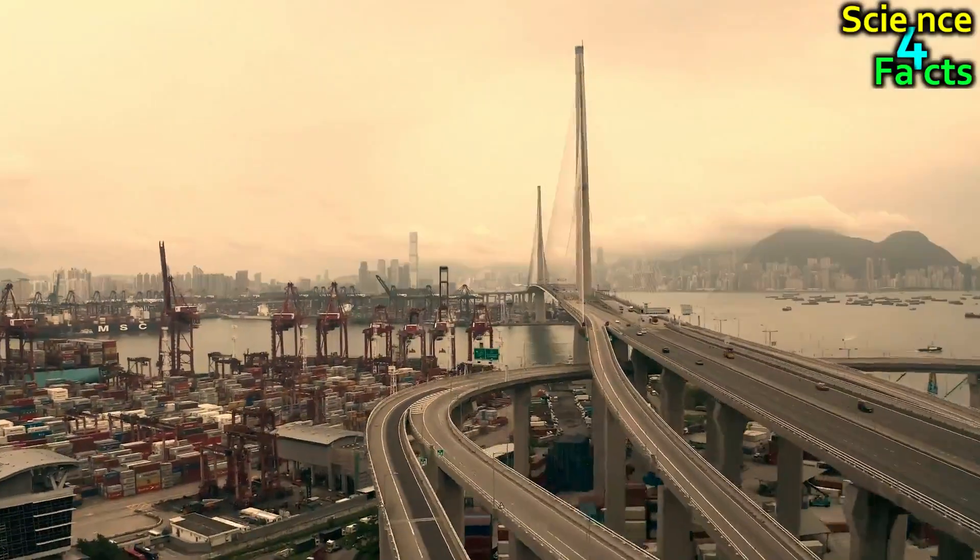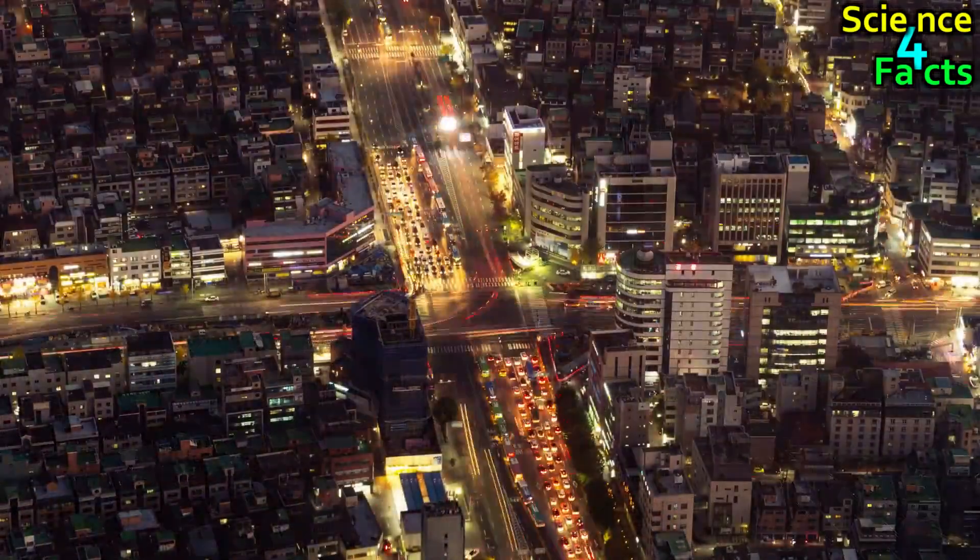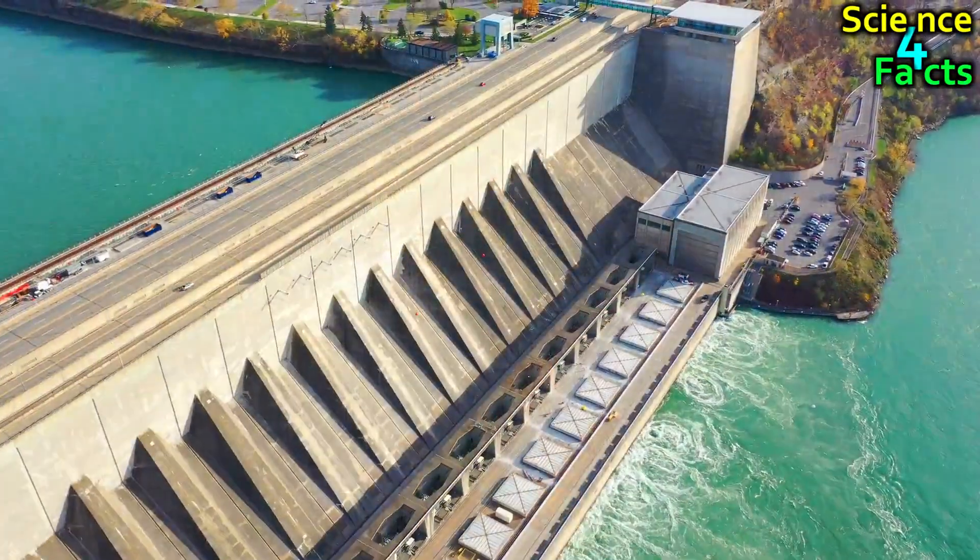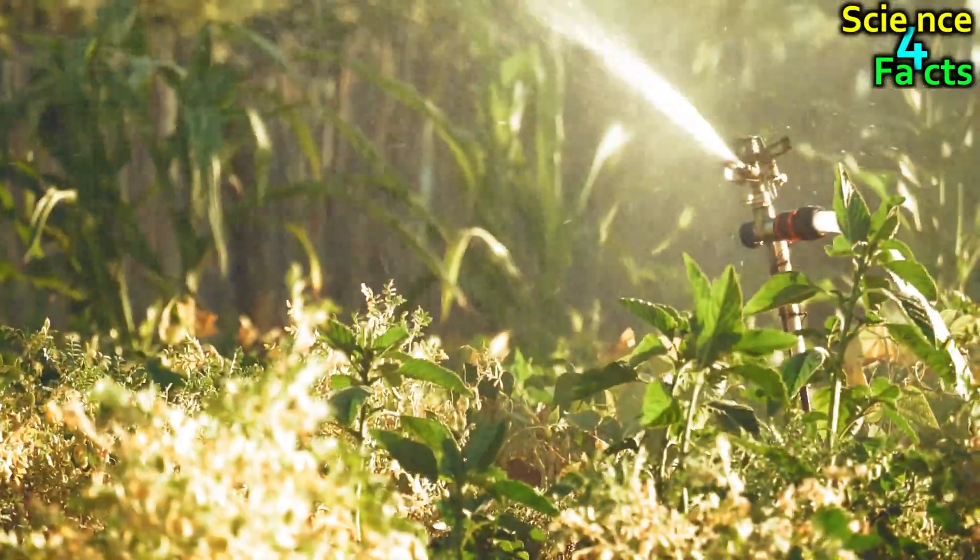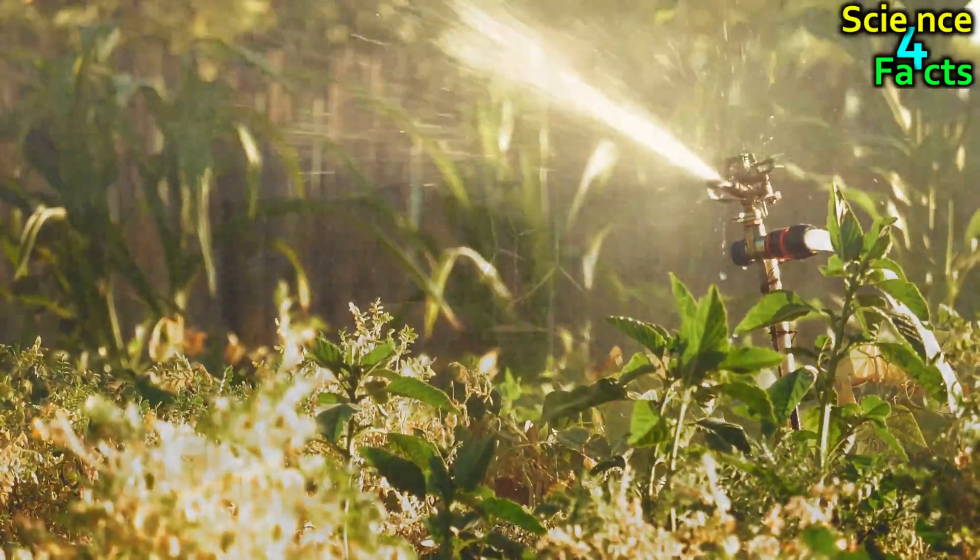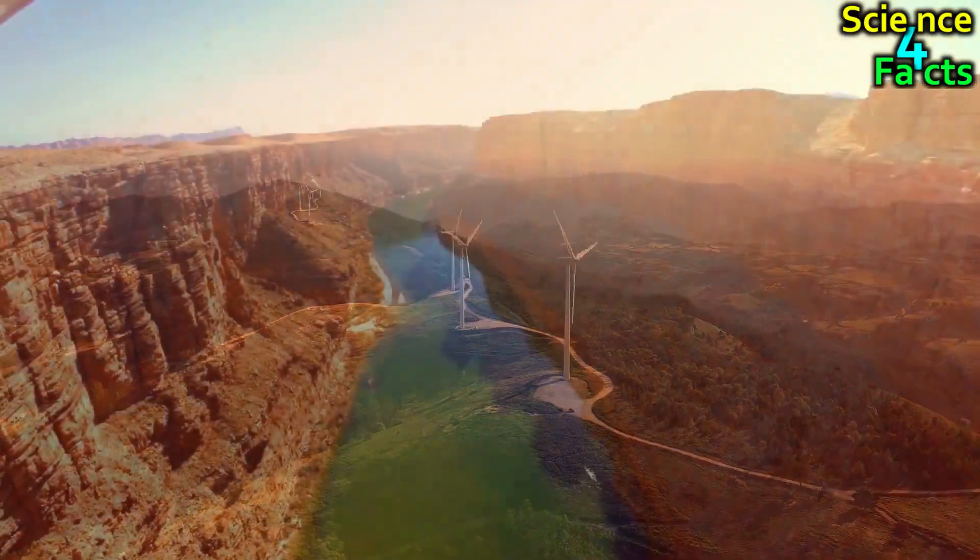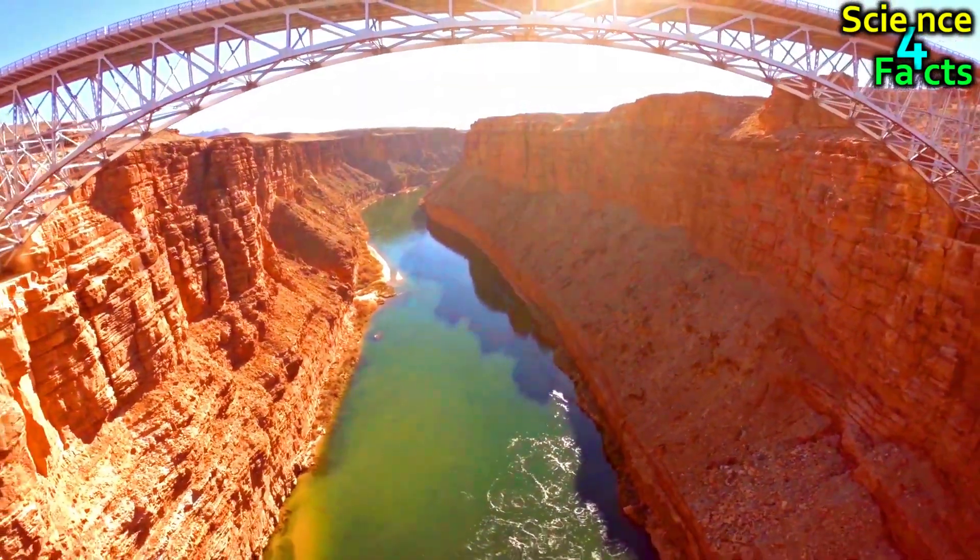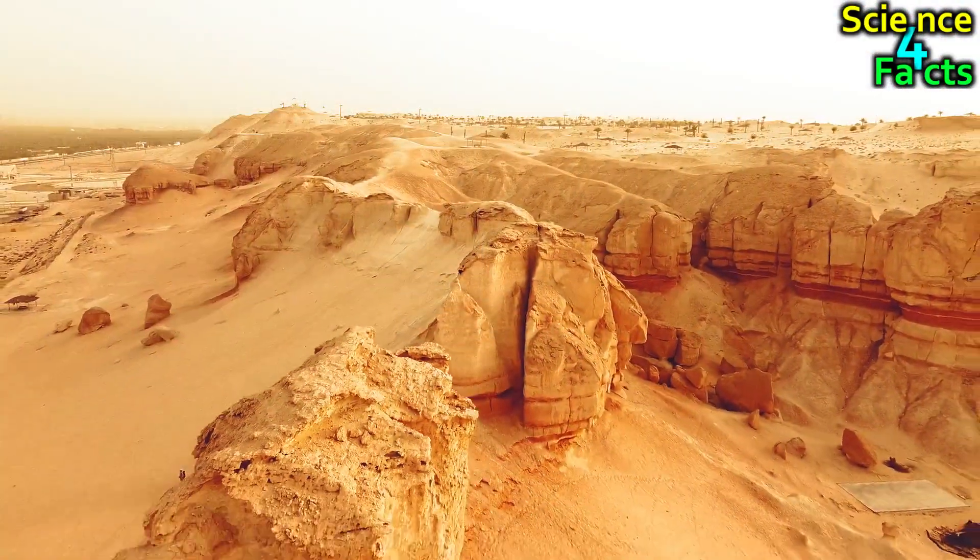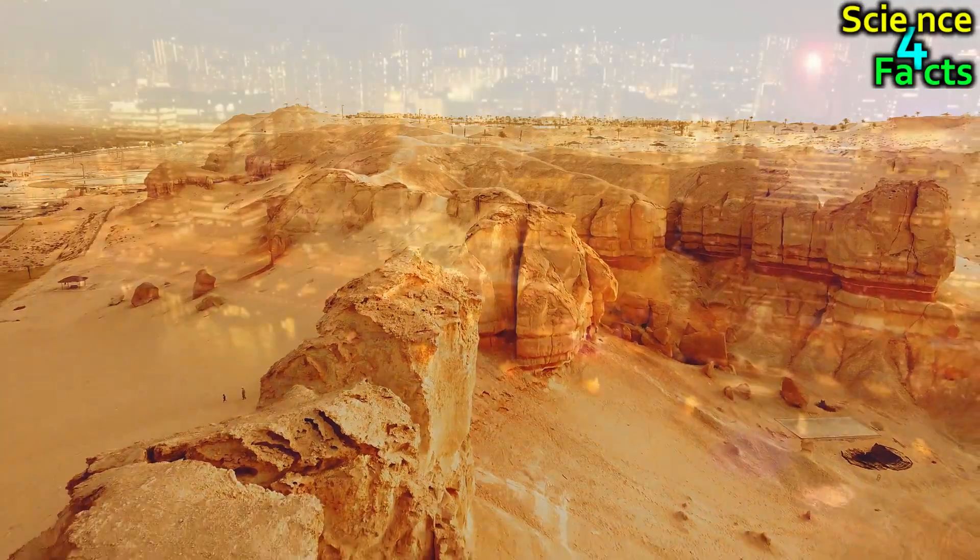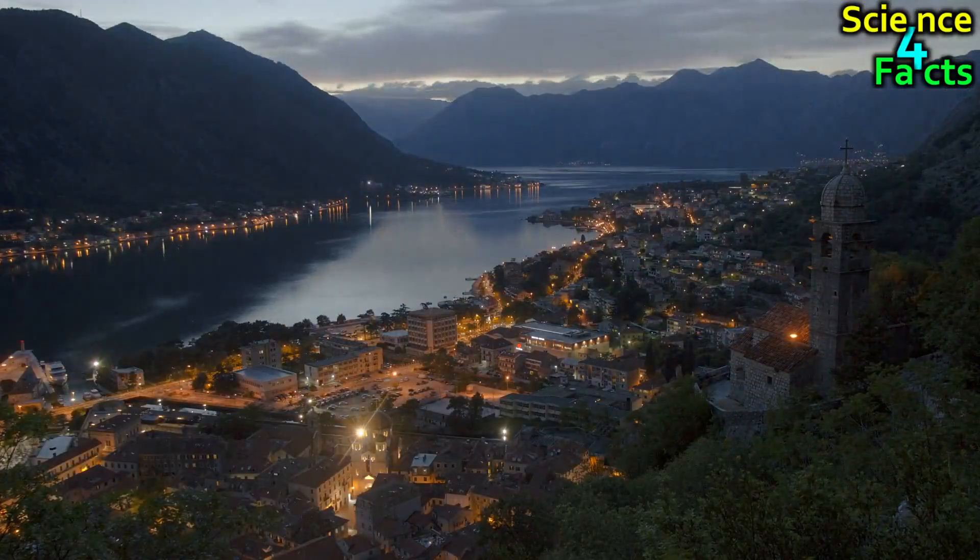In addition to its natural features, Earth's surface is also shaped by human activity. Cities, roads, and other infrastructure have altered the planet's landscape, and human activities such as deforestation, mining, and agriculture have had a significant impact on the planet's environment. Overall, Earth's surface is a dynamic and ever-changing environment, shaped by natural forces such as tectonic activity and erosion, as well as by human activity. Its diverse range of landforms and ecosystems make it a unique and fascinating planet to study, and a critical component of our understanding of the universe and our place within it.